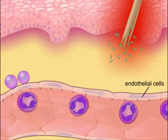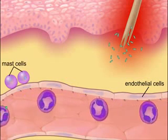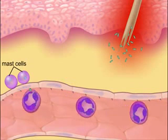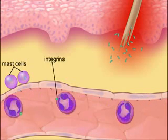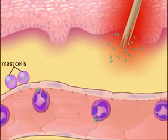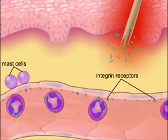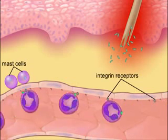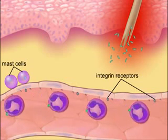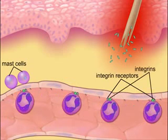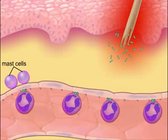As the neutrophils roll along the endothelium, they encounter chemicals that activate integrins, which are adhesion receptors on their surfaces. These integrins then tightly attach to adhesion receptor molecules on the endothelial cells, causing the neutrophils to stick to the endothelium and stop rolling. This accumulation of neutrophils along the walls of the capillary is referred to as margination.